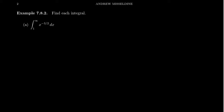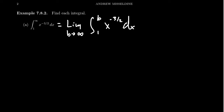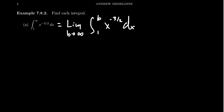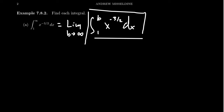Let's look at some examples. Take the integral from 1 to infinity of x to the negative 3 halves power. By definition, this improper integral is the limit as b approaches infinity of the integral from 1 to b of x to the negative 3 halves. The reason we emphasize the limit is that the Fundamental Theorem of Calculus does not apply to improper integrals — it only applies to proper integrals. Because b is a finite number, the Fundamental Theorem of Calculus does apply to the proper integral from 1 to b.